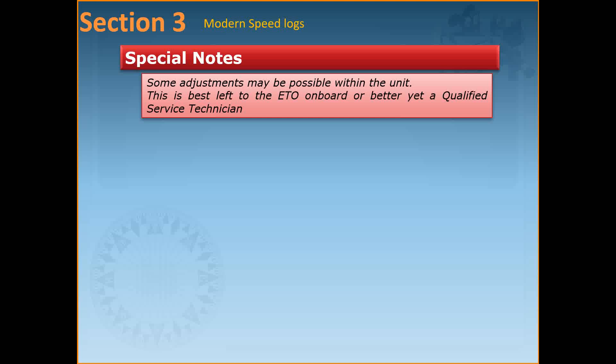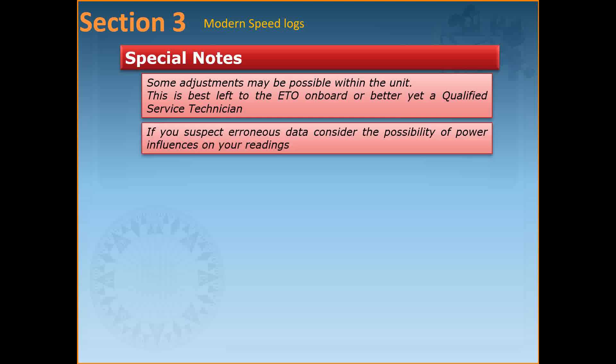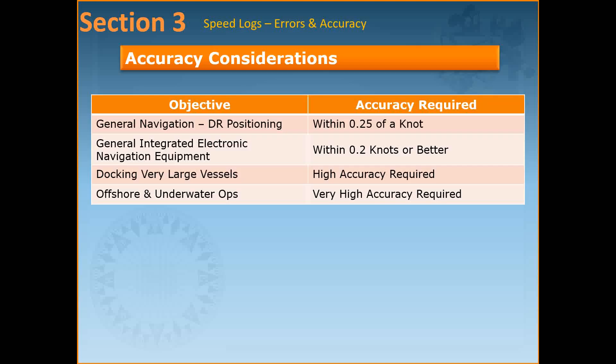Although it is possible to correct a fixed error caused by the misalignment of the transducer at installation by adjusting the controls inside the unit, since this system indicates the so-called water speed originally, check the error caused by the current of a tide.